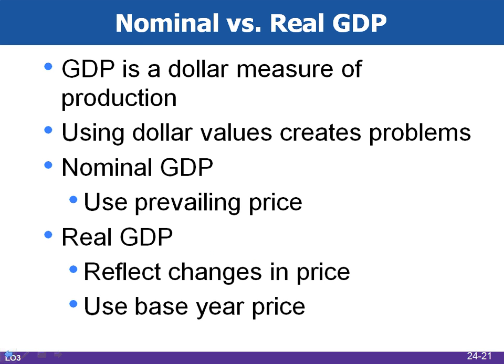GDP measures production at current dollar values, which creates problems because the value of the dollar changes over time. A hundred years ago, the purchasing power of one dollar was much different than it is today. To get around that problem, there are two different types of GDP. Nominal GDP is based upon the prices that were in effect when the output was produced. A GDP that has been deflated or inflated to reflect changes in price levels is referred to as real GDP, and to calculate it, a base year must be selected and the current year's prices adjusted accordingly.